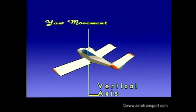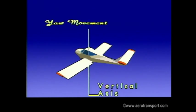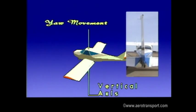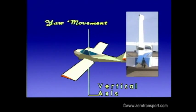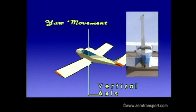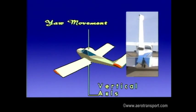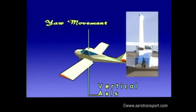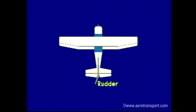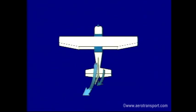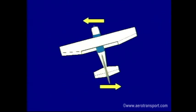Yaw is the movement around the vertical axis and is controlled by the rudder, which is hinged to the fin or vertical stabilizer of the aircraft. Foot pressure on the left rudder pedal causes the rudder to move to the left. This increases the camber of the fin, causing a mass of air to flow to the left. The result is the tail of the plane moves right while the nose moves to the left. Using the right rudder pedal produces the opposite effect.